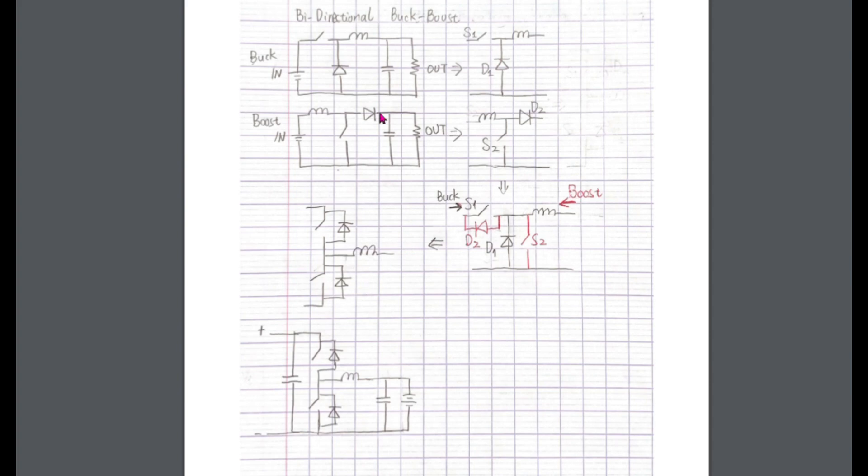As we can see here, when the current is going forward from left to right, switch S1 and the bottom diode D1 work together as a buck converter. When the current is going backward from right to left, switch S2 and the top diode D2 work as a boost converter.